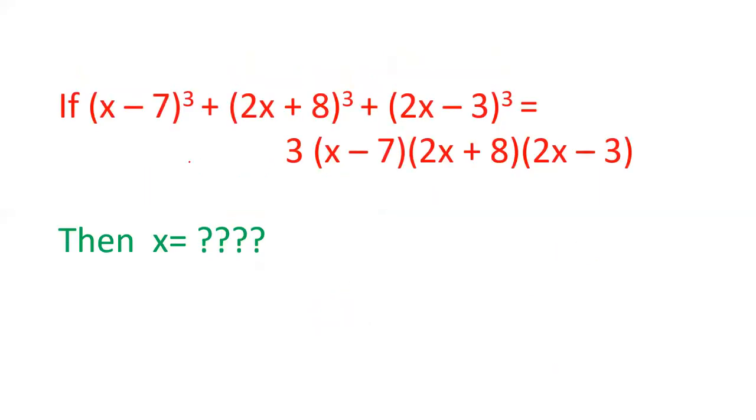Now let us see in this case. We consider the first bracket as a, so this is a³. The second bracket is b and the third bracket is c. So this equals 3abc. And if the cubes of three numbers equals 3abc, then a + b + c = 0.